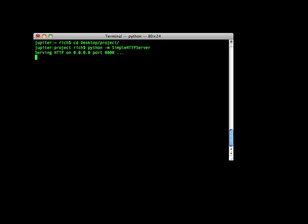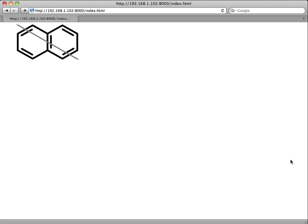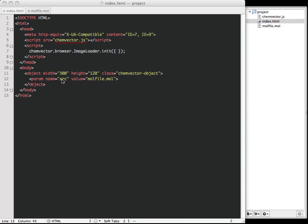Now, when I browse to the index.html page, I can see the chemical structure. The image was generated entirely in the browser from the molfile referenced in the object tag.